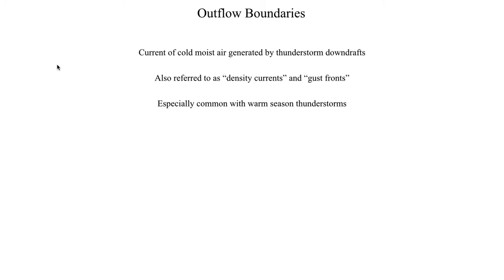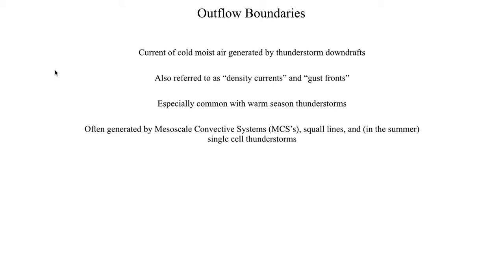Outflow boundaries are most common with warm season thunderstorms — that is, thunderstorms that occur in late spring or early summer. But mesoscale convective systems are notorious for creating outflow boundaries as well, and so are squall lines. Especially in the summer, single-cell thunderstorms are also great at producing outflow boundaries, which are those currents of cold air.